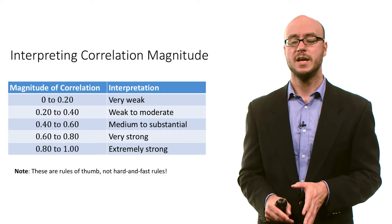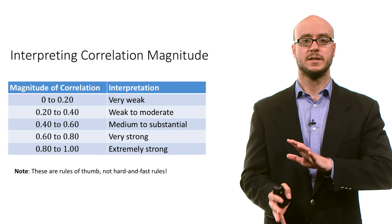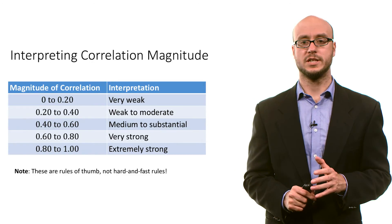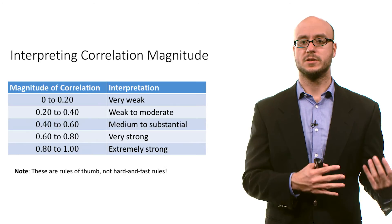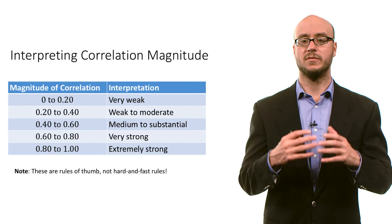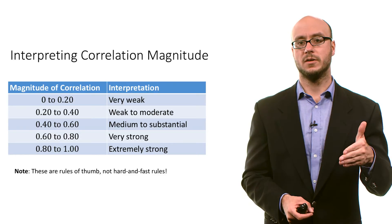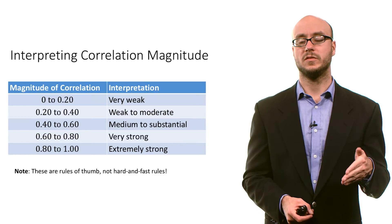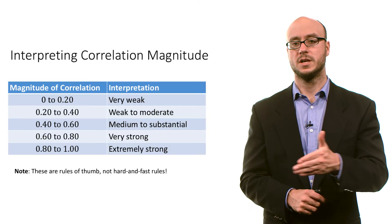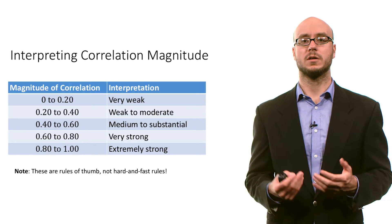If you talk to a psychologist, they might have a different set of criteria for understanding the magnitude of correlation than a sociologist or an economist. But this is just a general set of guidelines: the closer you are to 0 in terms of the magnitude of the correlation, the weaker the linear relationship. The closer the magnitude is to 1, the stronger the relationship.